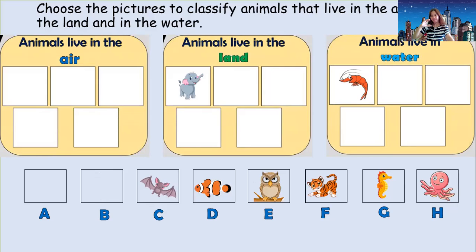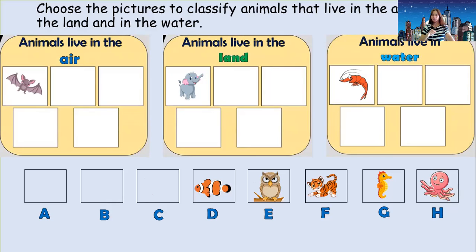How about picture C? What's that — can you name the animal? It's a bat. Where is the habitat of the bat? In the air. Let's check — is it really in the air? Very good, the bat lives in the air! Okay, next picture D — what is that? It's a fish. Okay, where is the habitat, or where does a fish live? In the water. Let's check your answer — very good, fish live in the water!